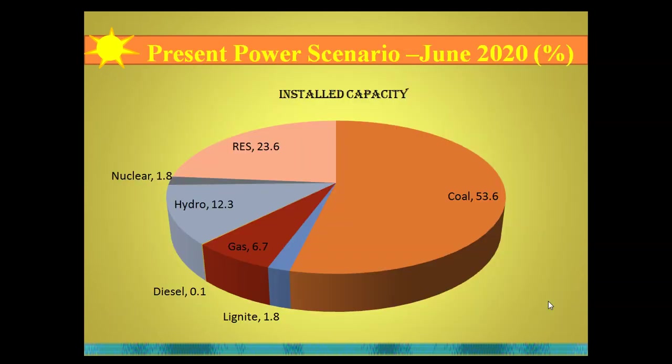This data has been taken from the Ministry of Power. We can see that in June 2020, the percentage contribution of renewable energy sources has grown to 23.6 percent — a considerable growth. The government is focusing on increasing the contribution of renewable energy sources in both installed capacity and power generation.